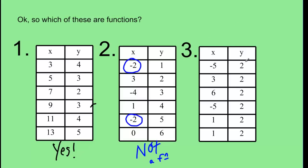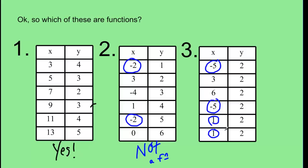What about number 3? Interesting situation — the y value is always 2. Let's remember our rule: for any given x value, there can only be one possible y value. Looking down the list, the x value negative 5 is repeated. That's okay as long as the y values for each of those negative 5s are the same. Both y values are 2, so that checks out. The x value 1 is also repeated, and in both cases y is 2. My rule checks out — for any given x value there's only one possible y value, so this is a function. Yes.